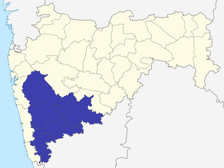The Solapur district is under proposal to be divided, with a separate Pandharpur district to be carved out of the existing Solapur district, comprising the Talukas of Pandharpur, Sangola, Karmala, Mangalweda, Malshiras, and Mada in Solapur district, as well as the Talukas of Jat and Atpadi from the neighbouring Sangli district.